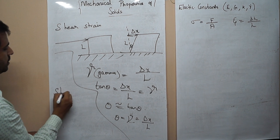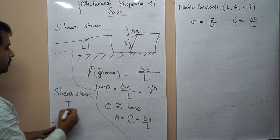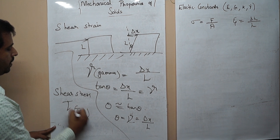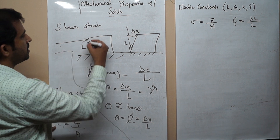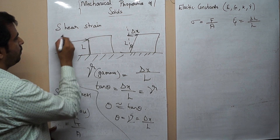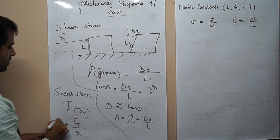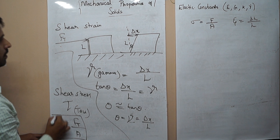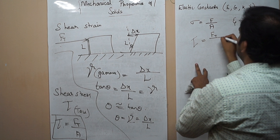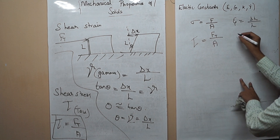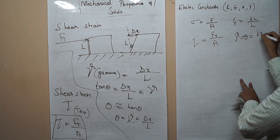Shear stress is indicated by the letter tau and equals the tangential force divided by the area of the face on which it acts — tau equals Ft divided by A. So we have: tau equals tangential force divided by area, and gamma equals theta equals delta x divided by L.